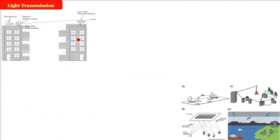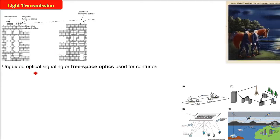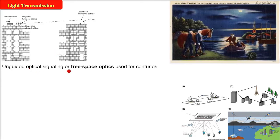Now, light transmission. How can you transmit data or do communication using light transmission? The unguided optical signaling — you can also call it free space optics. This is the visible light we are talking about. Free space optics have been used for centuries.